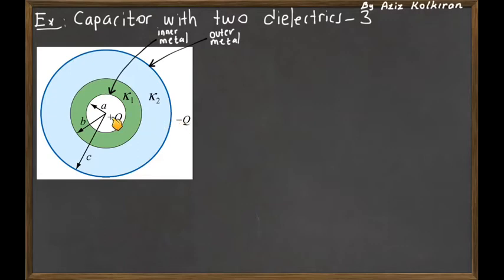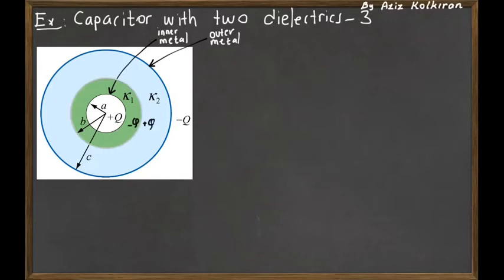So we have two metals, plus q and minus q. In between we have two different spherical dielectric materials with dielectric constants k1 and k2 at radii b and c. The question is: what is the capacitance of this configuration? There is no difference if you put a very thin metal shell on the border between the two dielectric materials k1 and k2.